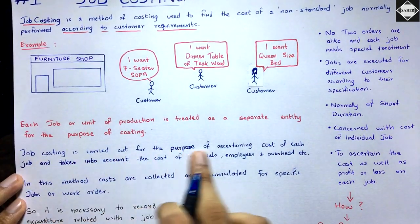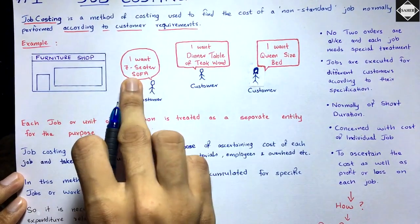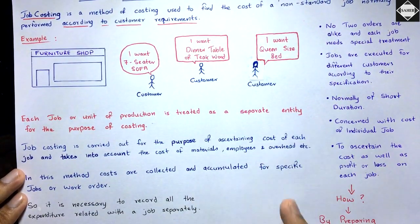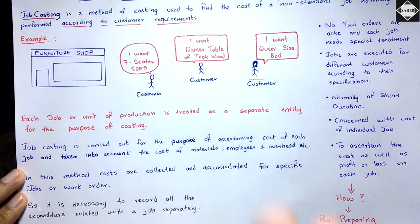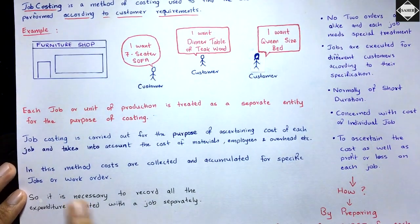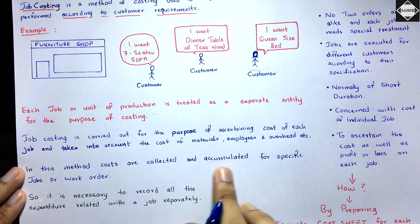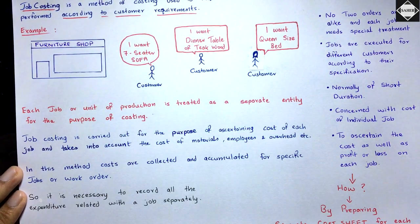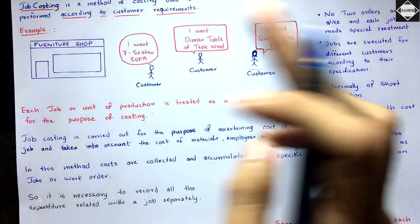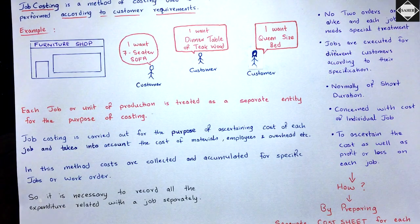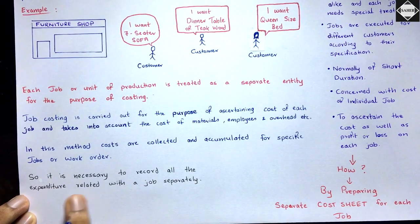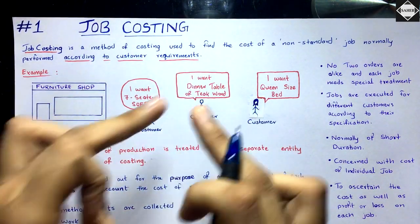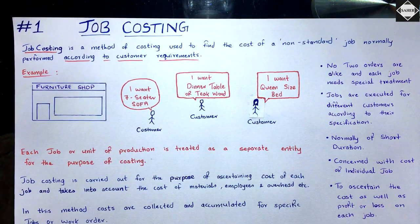Job costing is carried out to ascertain the cost of each job, taking into account the cost of materials required, the cost of direct labor, and overheads — factory overhead, production overhead, selling and distribution overheads. Costs are collected and accumulated for specific jobs in a job cost sheet. All expenditure related to a job is recorded separately in that cost sheet.